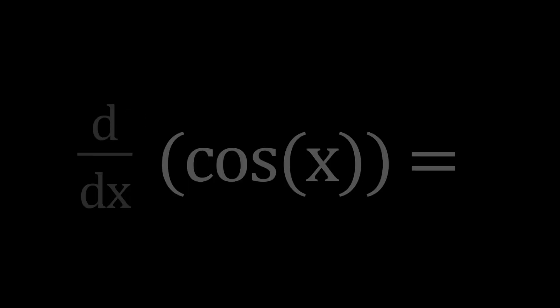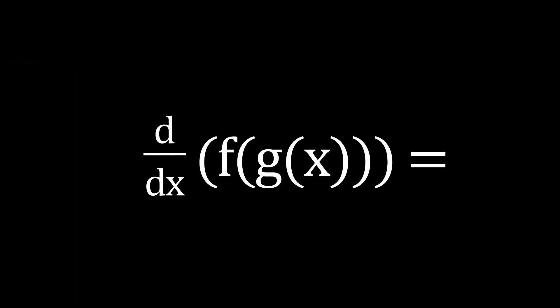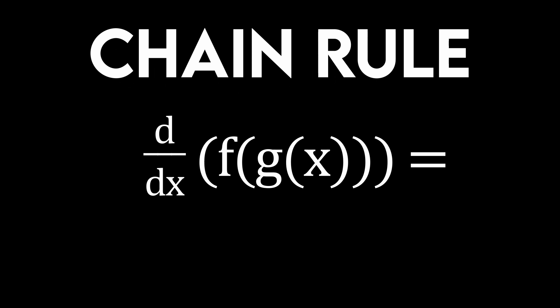It's time for the rule that's the last, but definitely not the least. The rule that allows us to combine functions. We call this the chain rule and it allows us to derive more complicated functions, such as this or this.